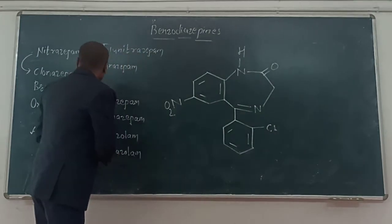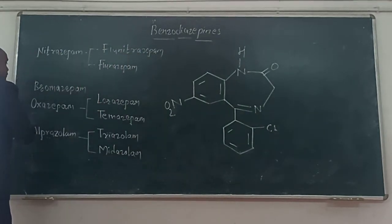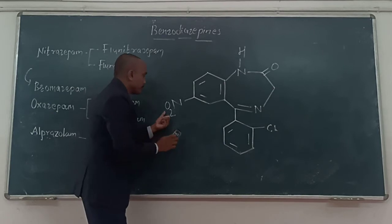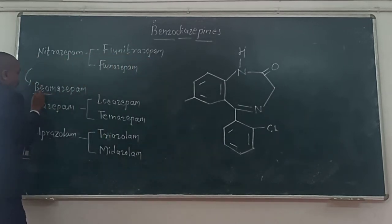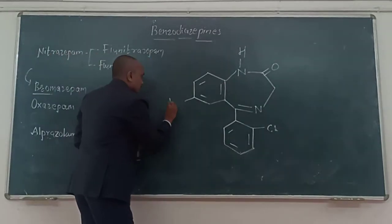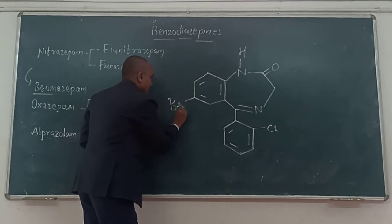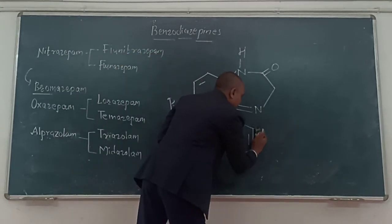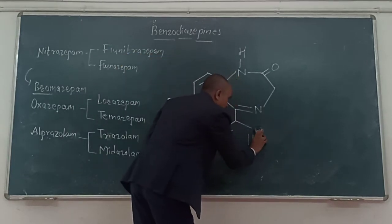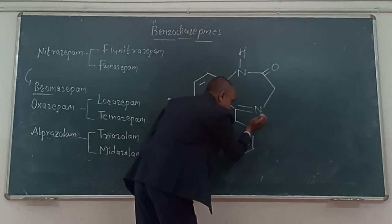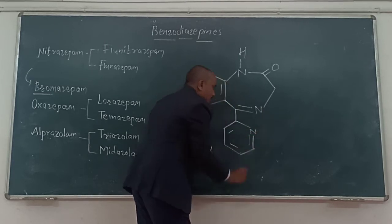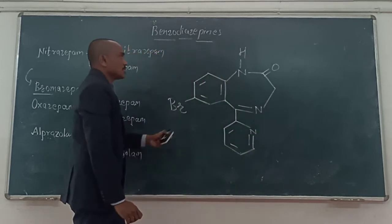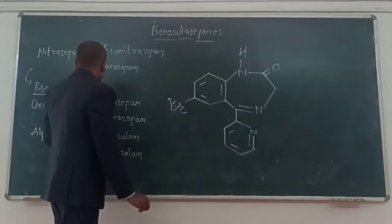After clonazepam, bromazepam can also be prepared. It contains bromine — indicated by the presence of bromine in the name. One more change: the phenyl ring is changed to a pyridine ring. So this is the structure for bromazepam.